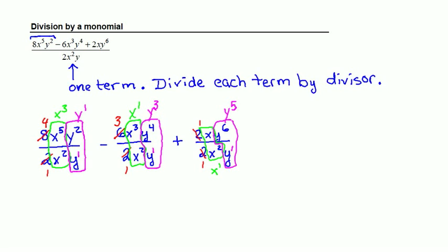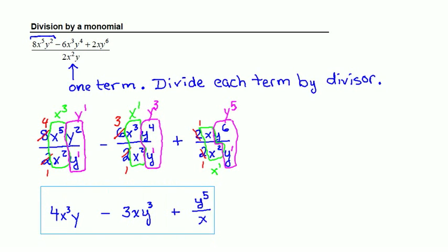So putting this all together, my first term is 4x cubed y. My second term is 3xy cubed. And my last term is y to the power of 5 over x. Very important that that x end up in the denominator. We don't have a numeric coefficient for that last term. The numbers all canceled out.